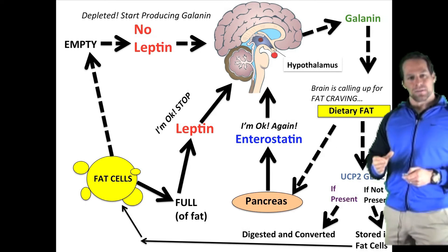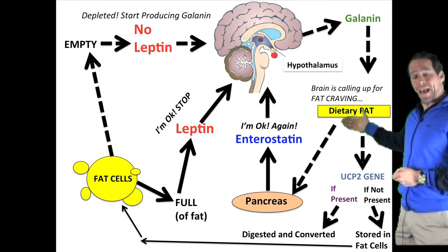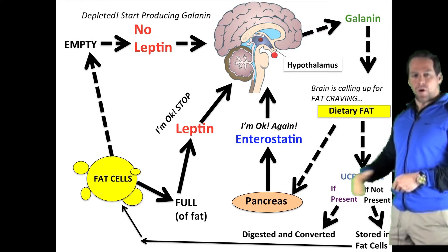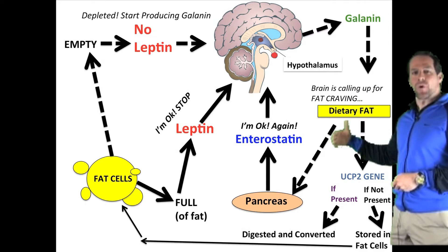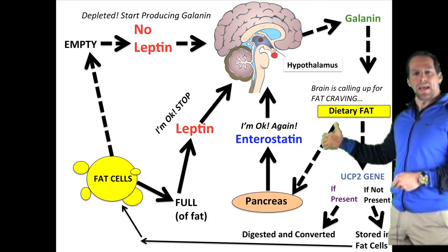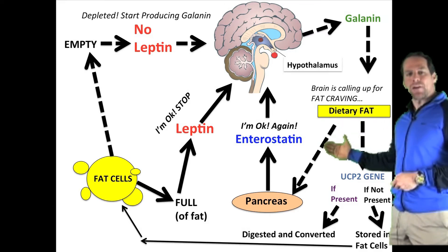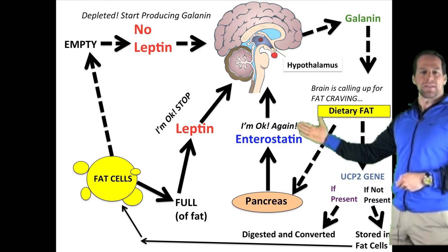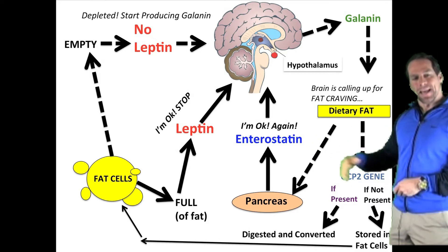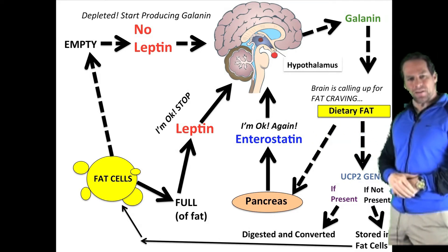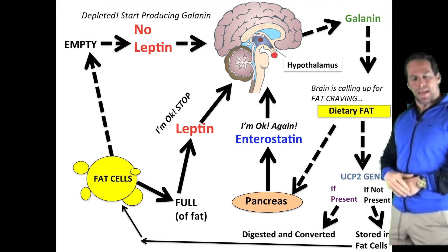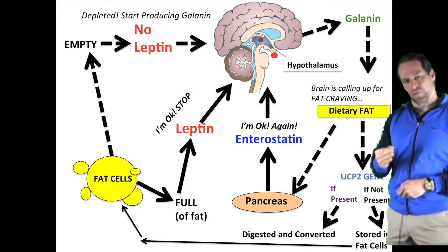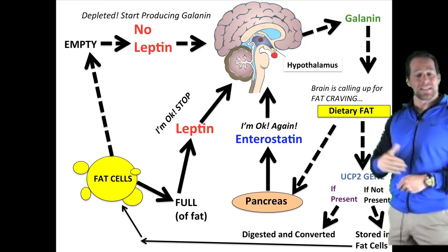The galanin cycle is shut off once fat reaches the pancreas. When the pancreas is aware of what is going on with the fat in the blood system, it will release entrostatin. Entrostatin is a pentapeptide that suppresses the feeding cycle, shutting it off. It essentially helps turn off the cravings for fat, ending the eating sequence.